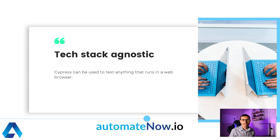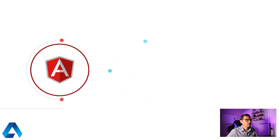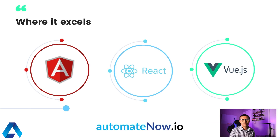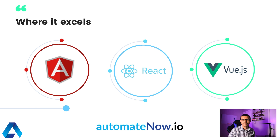Cypress is tech stack agnostic, meaning that we can use it to test anything that runs on a browser, regardless of what your tech stack looks like. It is designed to test web apps that are written in modern JavaScript frameworks such as Angular, React, and Vue. This does not mean, however, that you cannot use it to test other types of web apps. And now let's have a look at what you came here for — to see the difference between Cypress and Selenium.